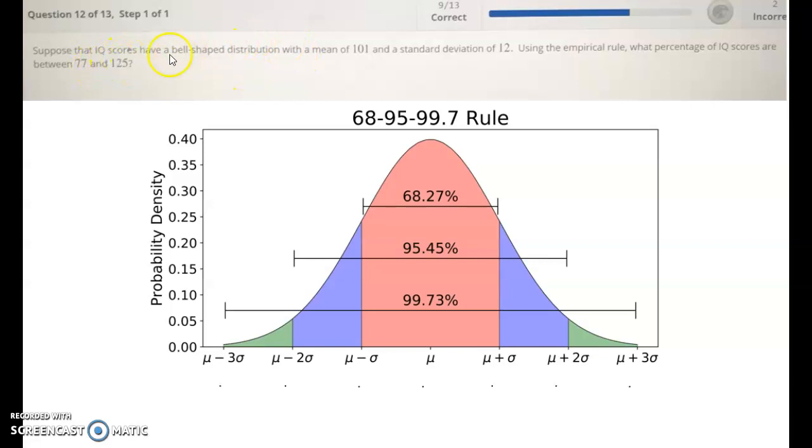So here we have IQ scores have bell-shaped distribution with mean of 101, standard deviation of 12. So before we even try to figure out the 77 and 125, let's change these into actual numbers. So it says the mean of this distribution is 101, so that would be right here. That symbol μ, the Greek letter for M, which is why it stands for mean.